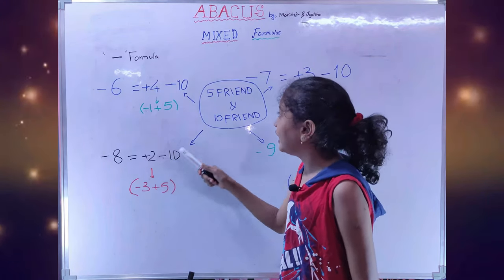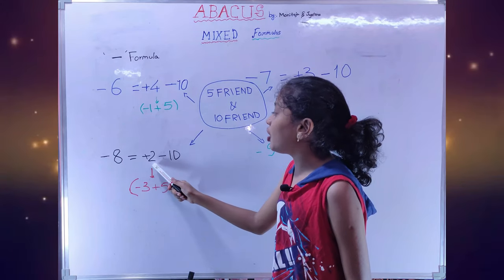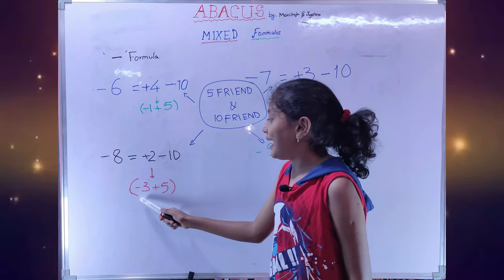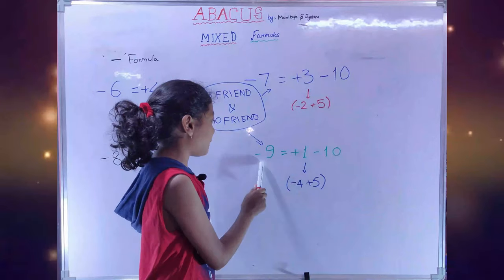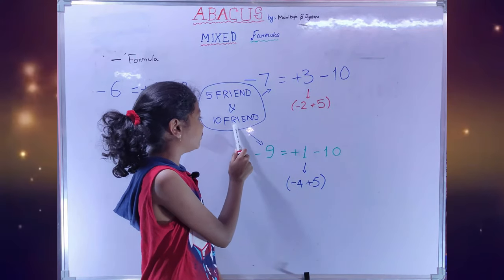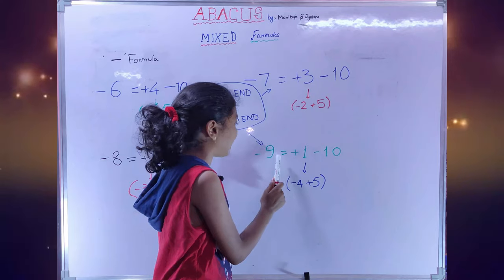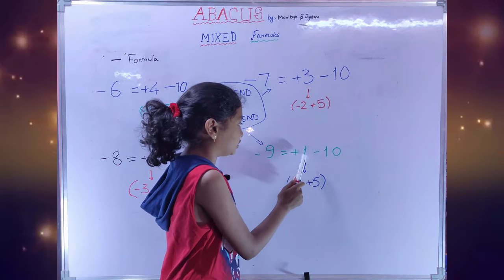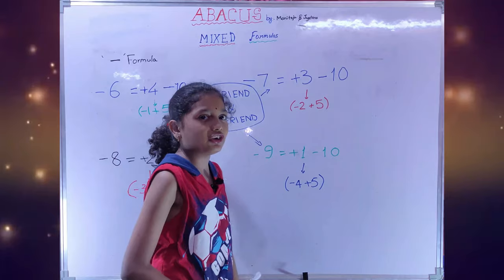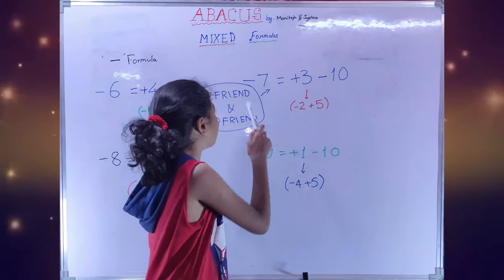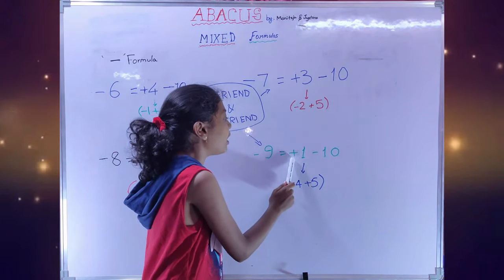When we don't have plus 2 to add, we will use 5 friends. 5 friends: plus 2 is equal to minus 3 plus 5. To subtract 9, we will use 10 friends. 10 friends: minus 9 is equal to plus 1 minus 10. When we don't have 1 to add, we will use 5 friends. Plus 1 is equal to minus 4 plus 5.